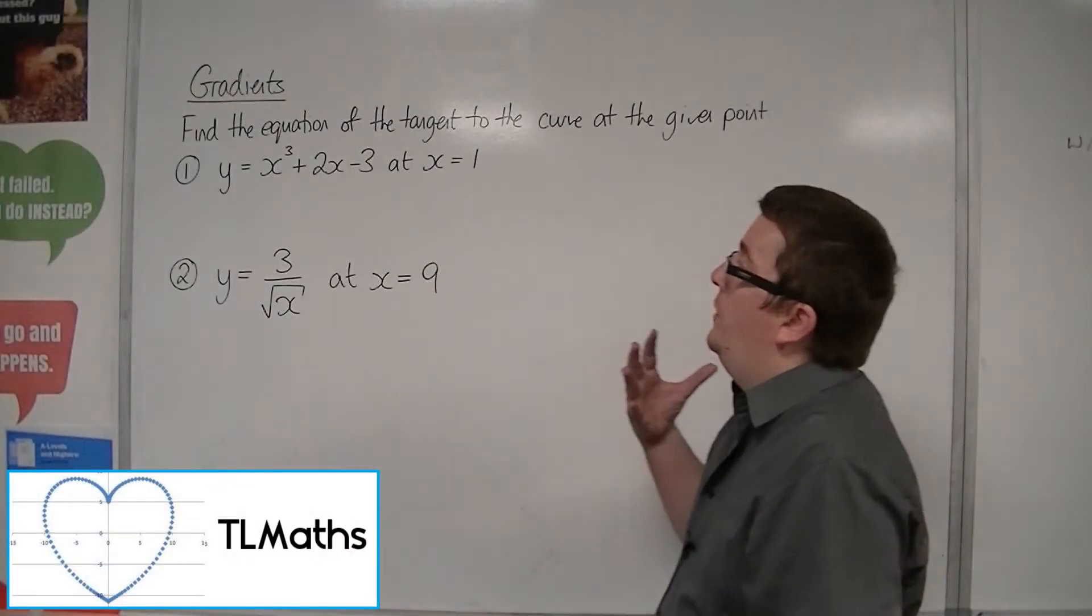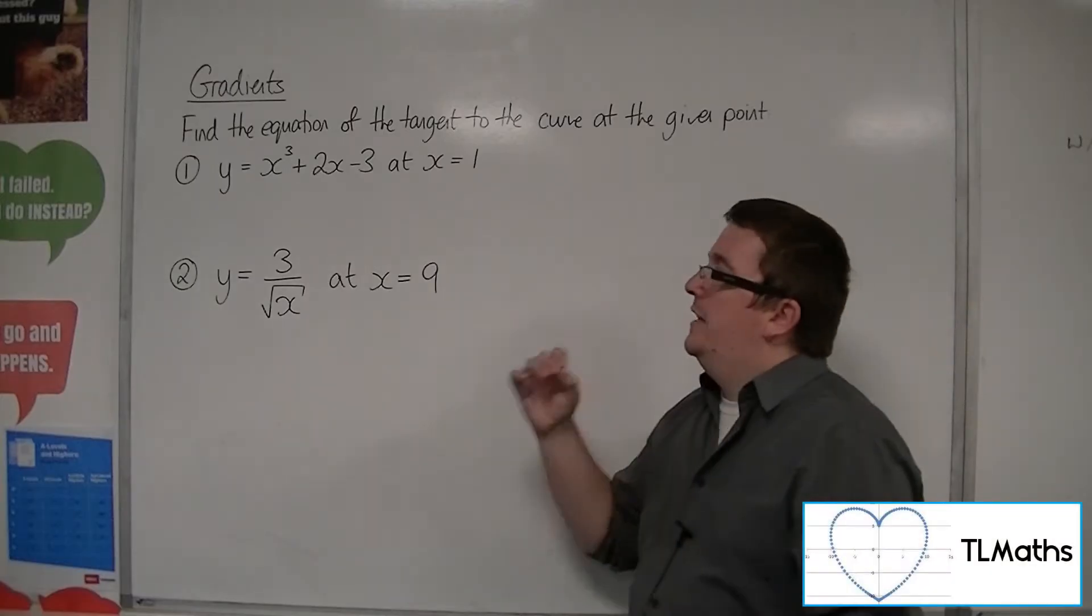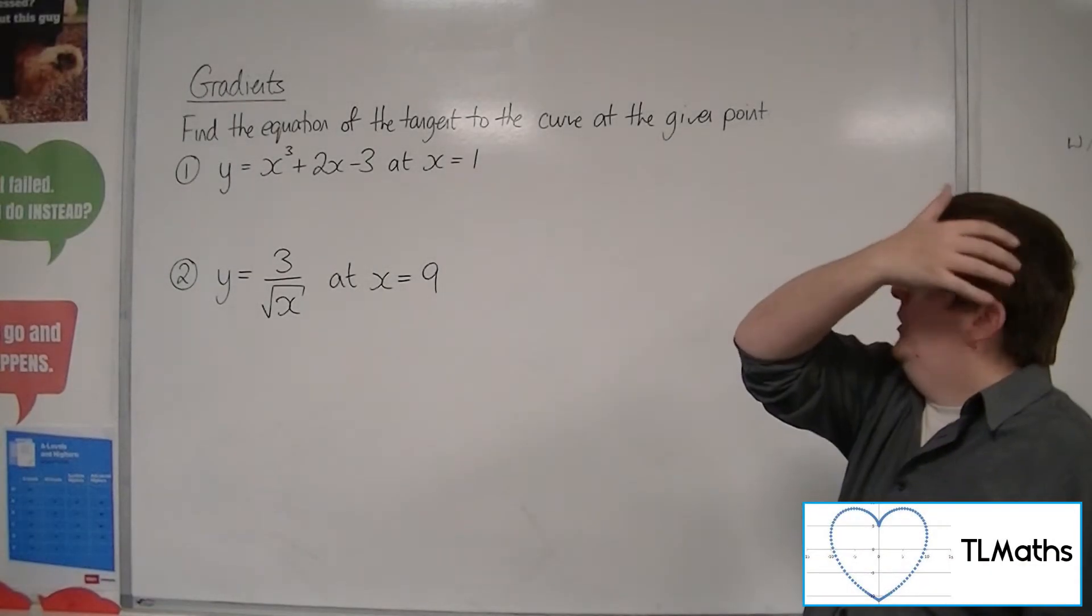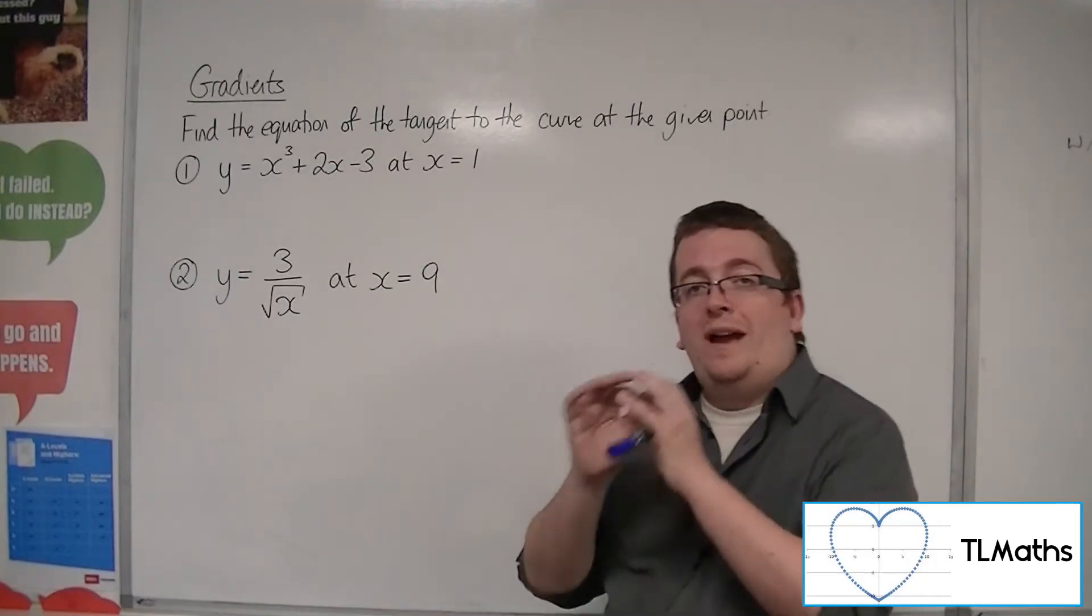Let's say I want to find the equation of the tangent to the curve at the given point for each of these. So for number 1 we've got y equals x cubed plus 2x minus 3 and we want to find the equation of the tangent at x equals 1.